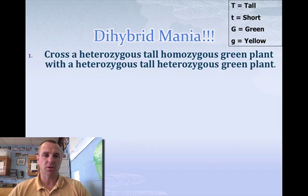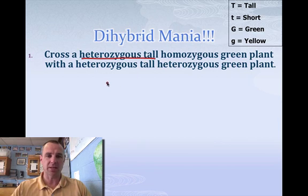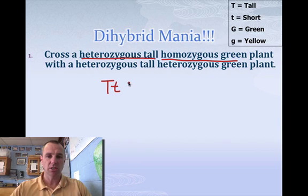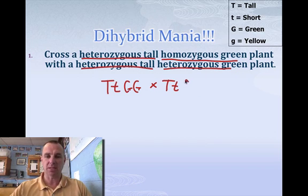Here's the type of question I would ask on the test: cross a heterozygous tall, homozygous green plant with a heterozygous tall, heterozygous green plant. Don't get freaked out — it's not that difficult. Heterozygous tall means big T, little t. Homozygous green means big G, big G. That's parent number one. The second parent is heterozygous tall — big T, little t — and heterozygous green — big G, little g. So those are the two parents we're crossing.